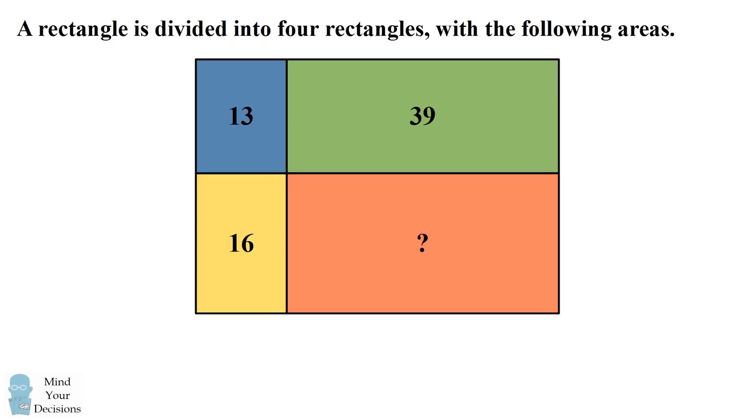The yellow rectangle has an area of 16, the blue rectangle has an area of 13, and the green rectangle has an area of 39. What is the area of the orange rectangle?